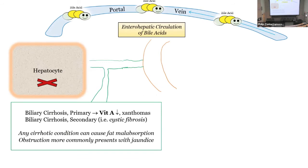Primary biliary cirrhosis — also called primary biliary cholangitis — represents failure of bile salts to get into the gut or out of the liver. We're talking about fat-soluble vitamin deficiencies in general, but most typically with primary biliary cirrhosis, they seem to bury vitamin A derivatives. It can be with any form of steatorrhea, but that's where they tend to associate it.